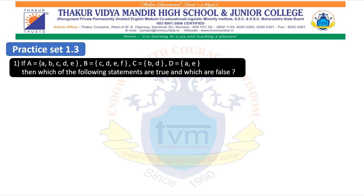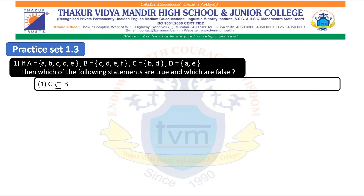Main question 1. If A is a set of {A, B, C, D, E}, B is a set of {C, D, E, F}, C is a set of {B, D}, and D is a set of {A, E}, then which of the following statements are true and which are false? First statement: C is a subset of B. It means all the elements of C should be included in set B. The elements of set C are B and D. The element B is not included in set B. As all the elements of set C are not included in set B, this statement is false.